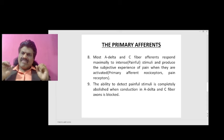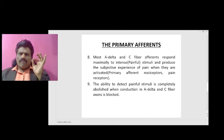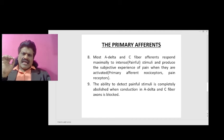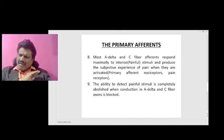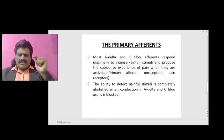These are called primary afferent nociceptors, or pain receptors. The ability to detect painful stimuli is completely abolished when conduction in A-delta and C fiber axons is blocked.